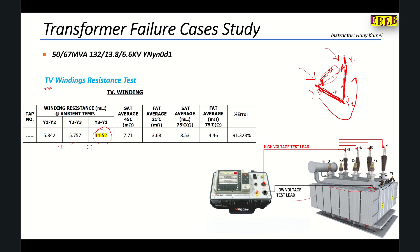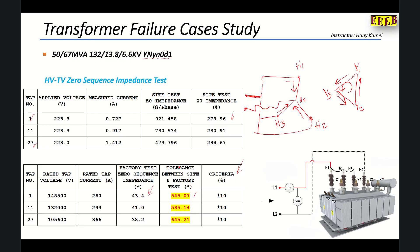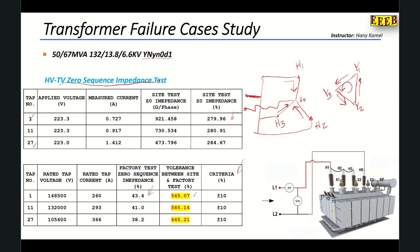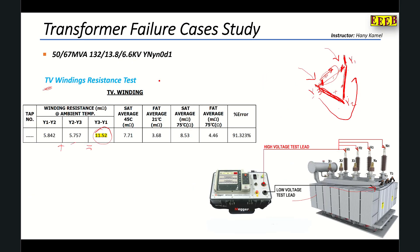This open branch is why the zero sequence and positive sequence impedance tests both failed. After draining the transformer oil and performing an internal inspection, we found a problem in that branch. The manufacturer reconnected the winding and the results were perfect.